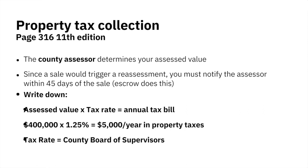Another question on the test: who calculates the tax rate? We know who calculates the assessed value — that's the county assessor. The tax rate in your area is determined by the county board of supervisors. So: to determine your annual tax bill, take the assessed value multiplied by the tax rate. Who determines the assessed value? The county assessor — and they were elected. Who determines the tax rate? The board of supervisors.